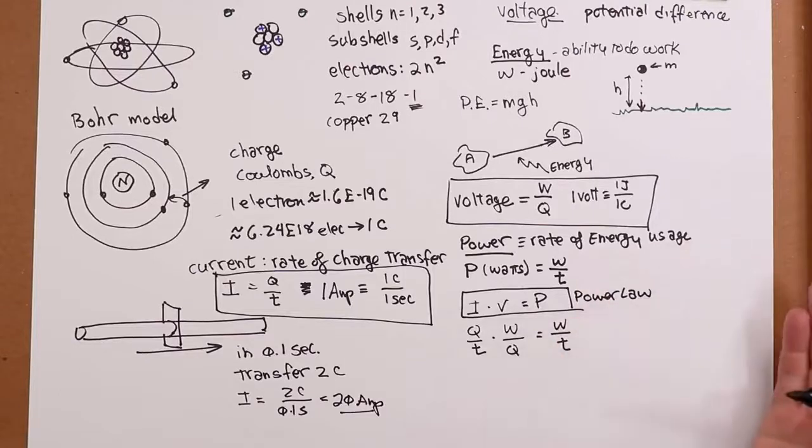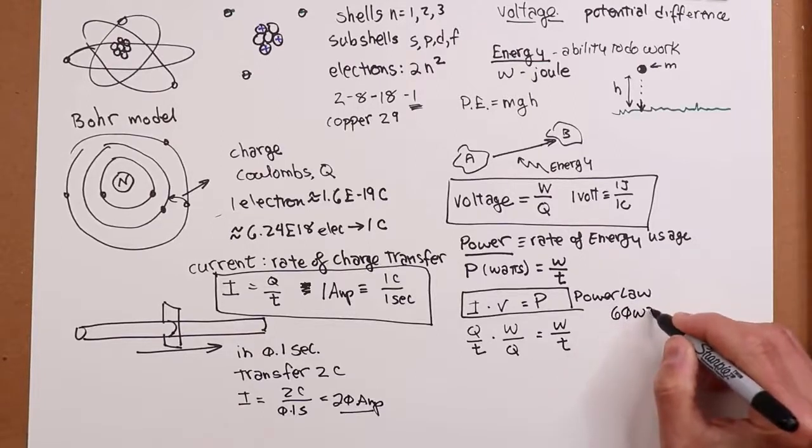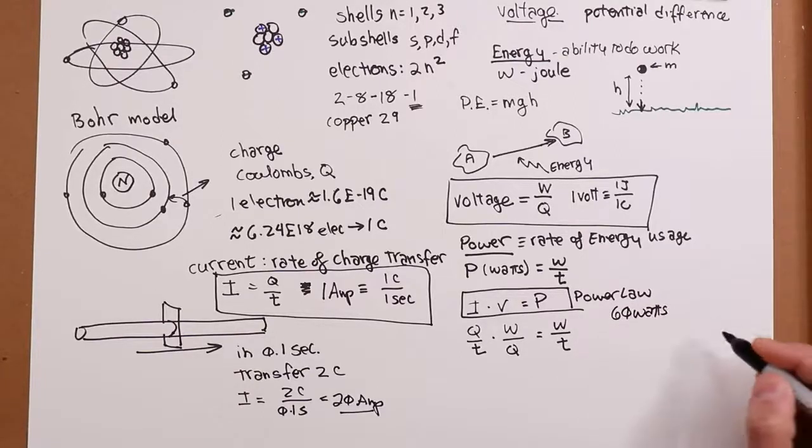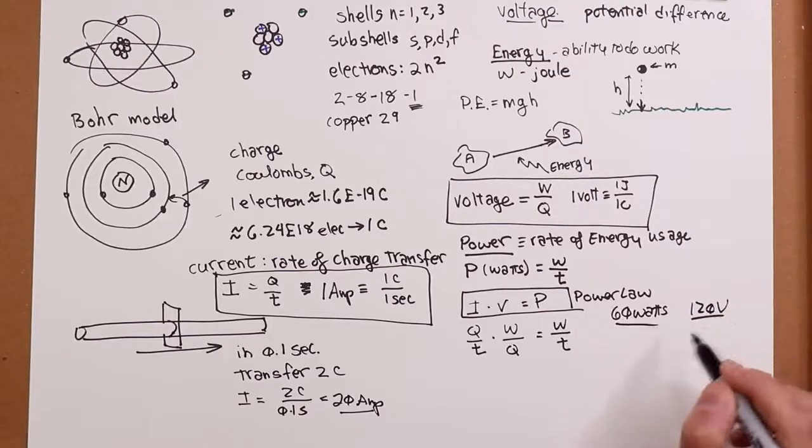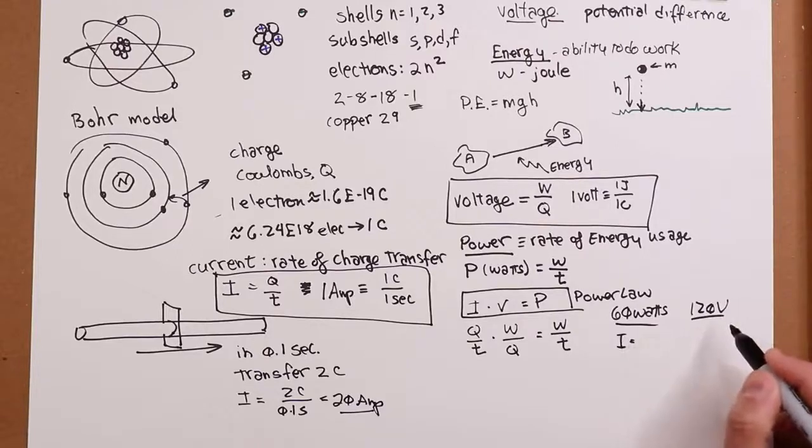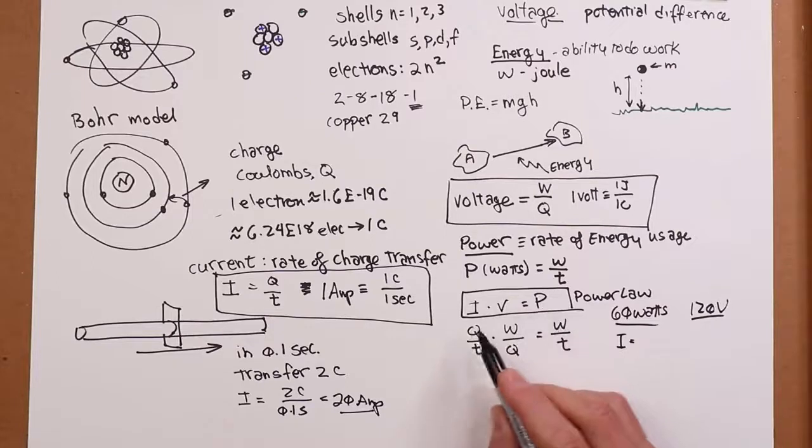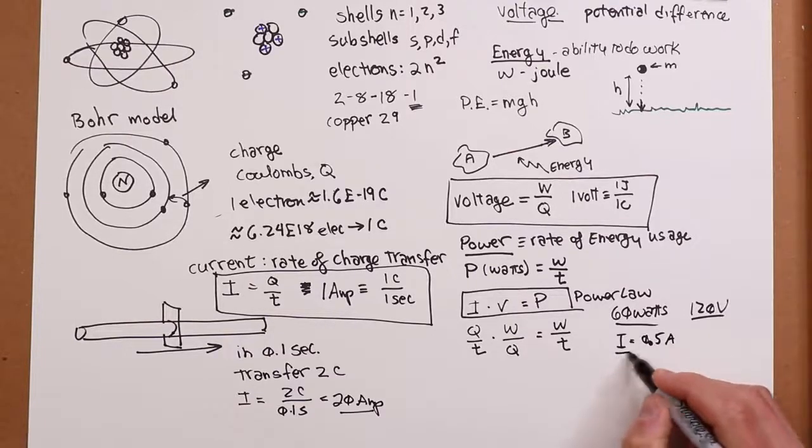So, as an example, if you had an old-fashioned incandescent light bulb, and really, who uses those anymore? But it was 60 watts and you live in North America, so that your system voltage, your house voltage is 120 volts. If you just divide those out, you can see that your current must be 120 volts, 60 watts, current must be half an amp.